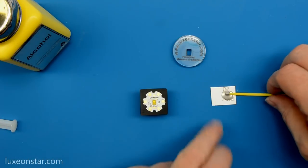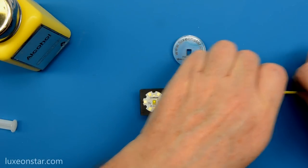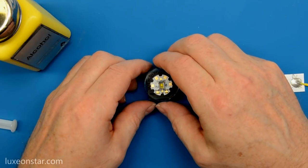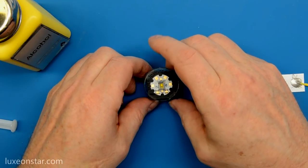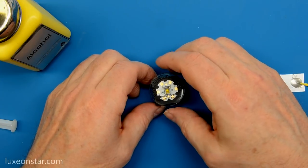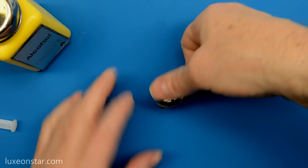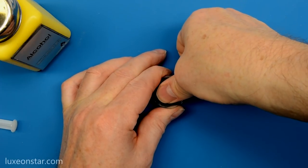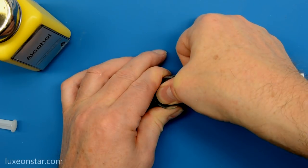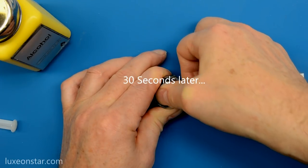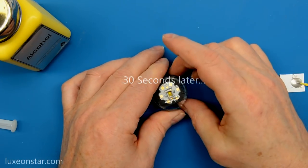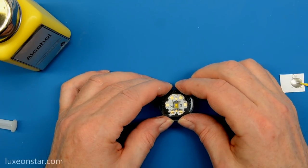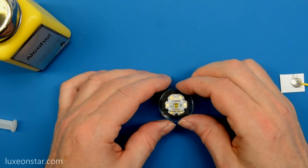Now you want to take your LED press, set it on top with the LED in the opening, and making sure that's all lined up. Then you want to put as much pressure as you can on top for about 30 seconds. Now leave this in place.